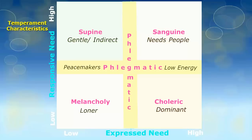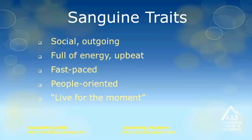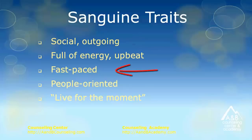Looking at the sanguines: they typically love being around people and need people. Key general traits of the sanguine include being very social and outgoing, full of energy and upbeat, fun to be around, living life at a fast pace, people-oriented, and living for the moment. The phrase often used is that sanguines are like sunshine on a cloudy day when they come into a room.